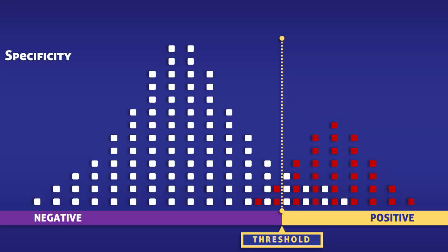When calculating specificity, we need to look at the position of the white squares in relation to the yellow line. To the left of the line, we have the true negatives, and to the right, the false positives.